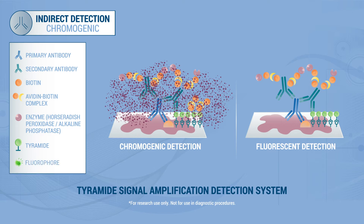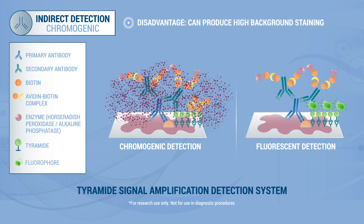Alternatively, tyramide can be directly bound to a fluorophore, enhancing the fluorescent signal without the need for further assay steps.